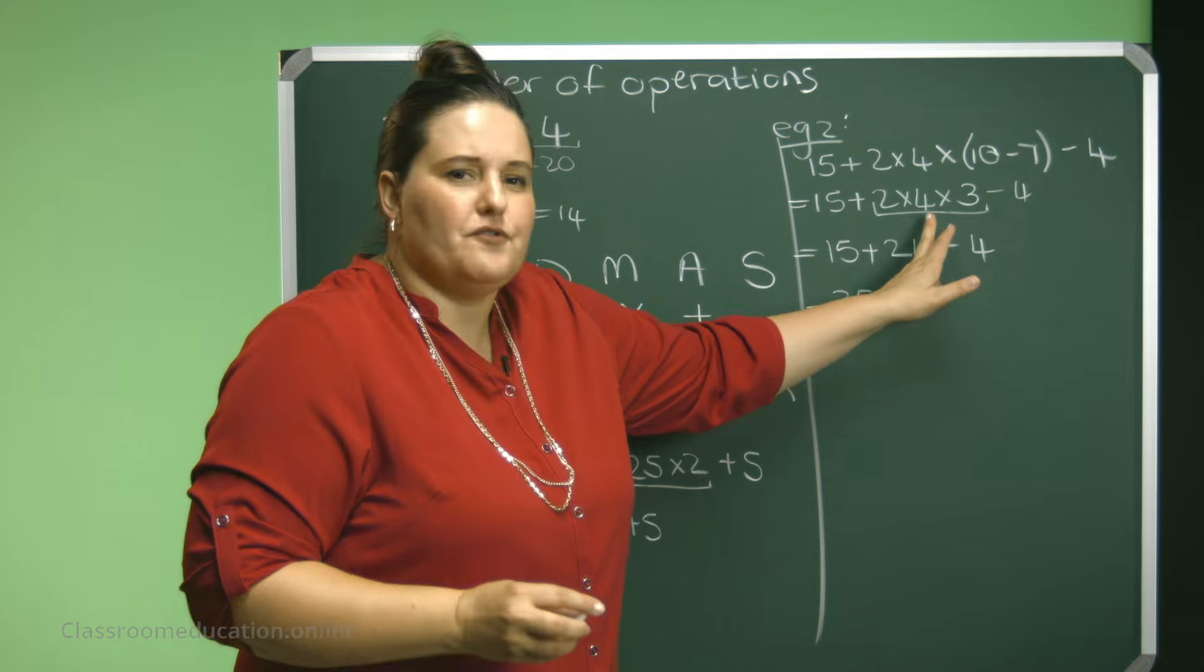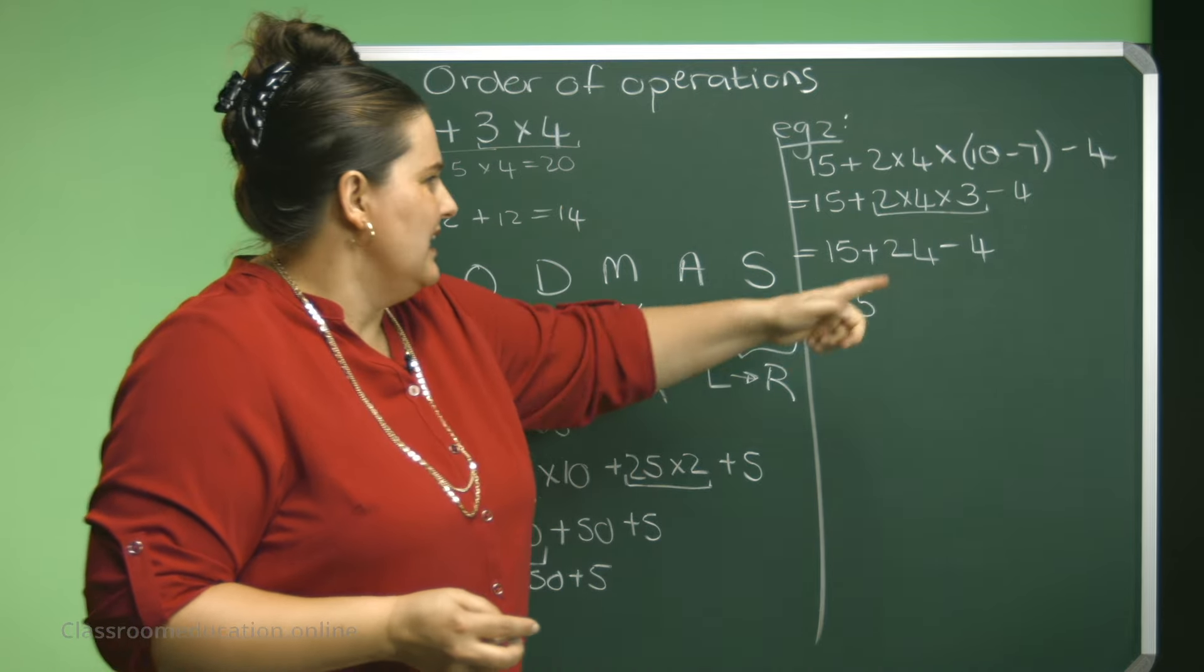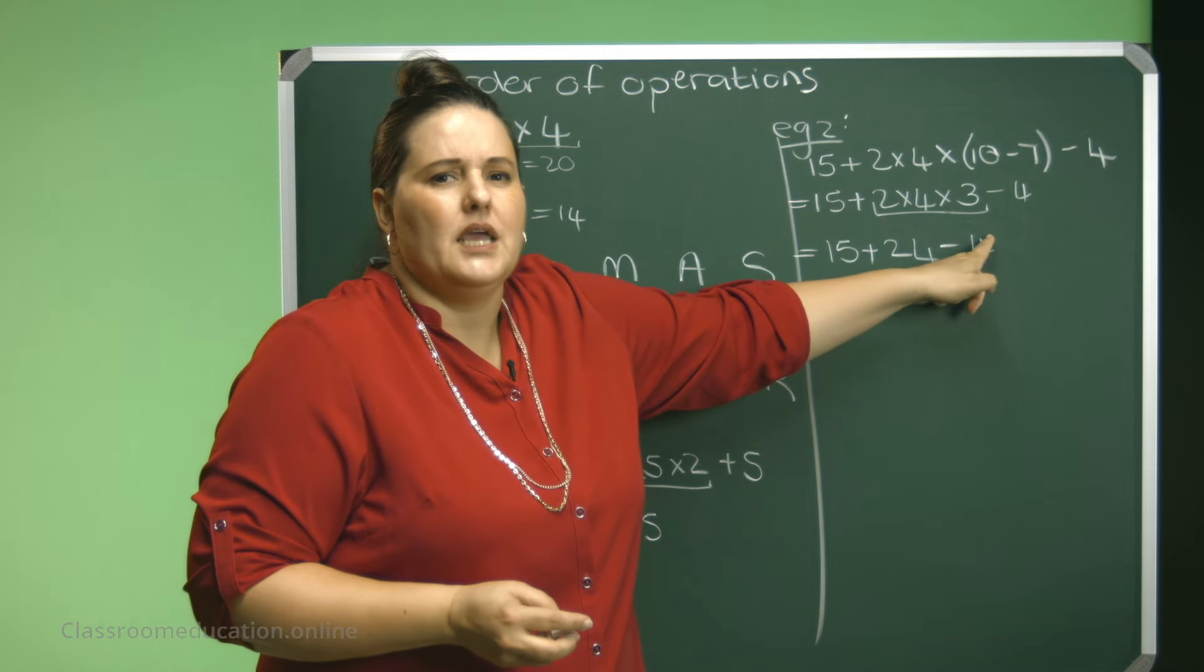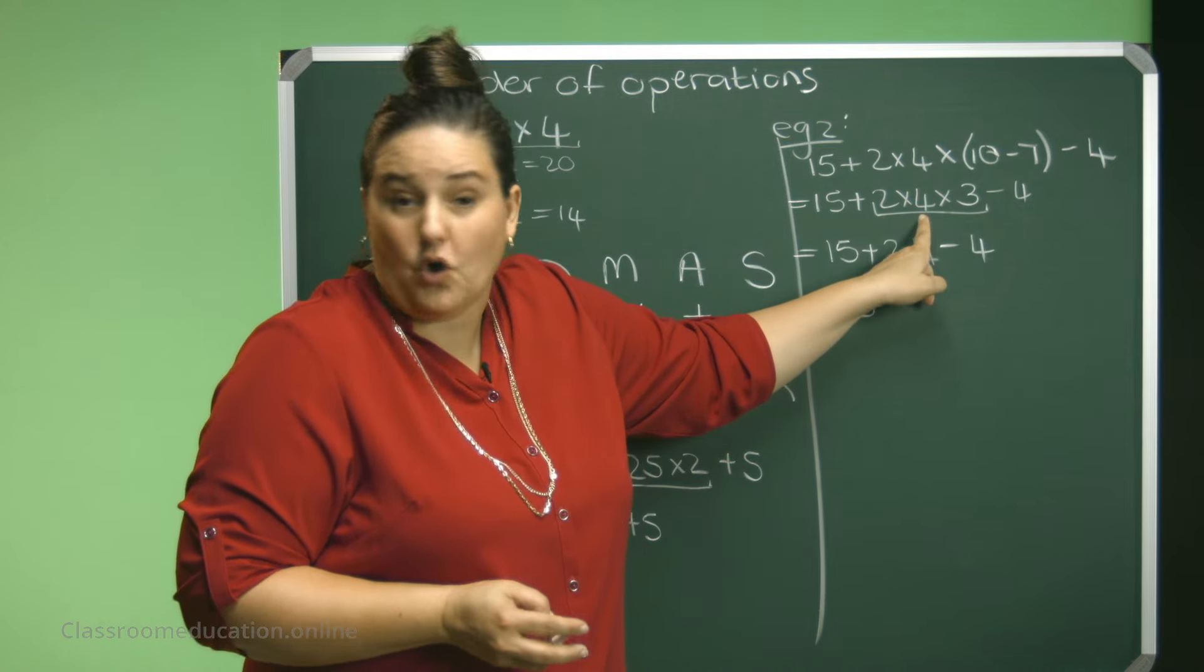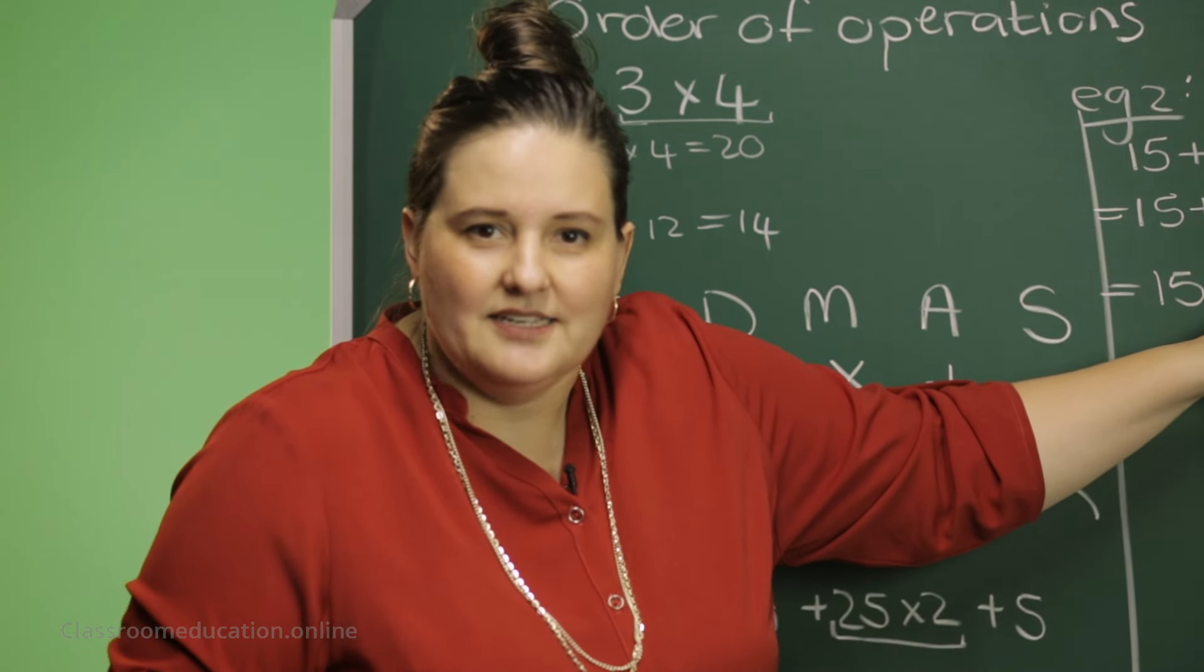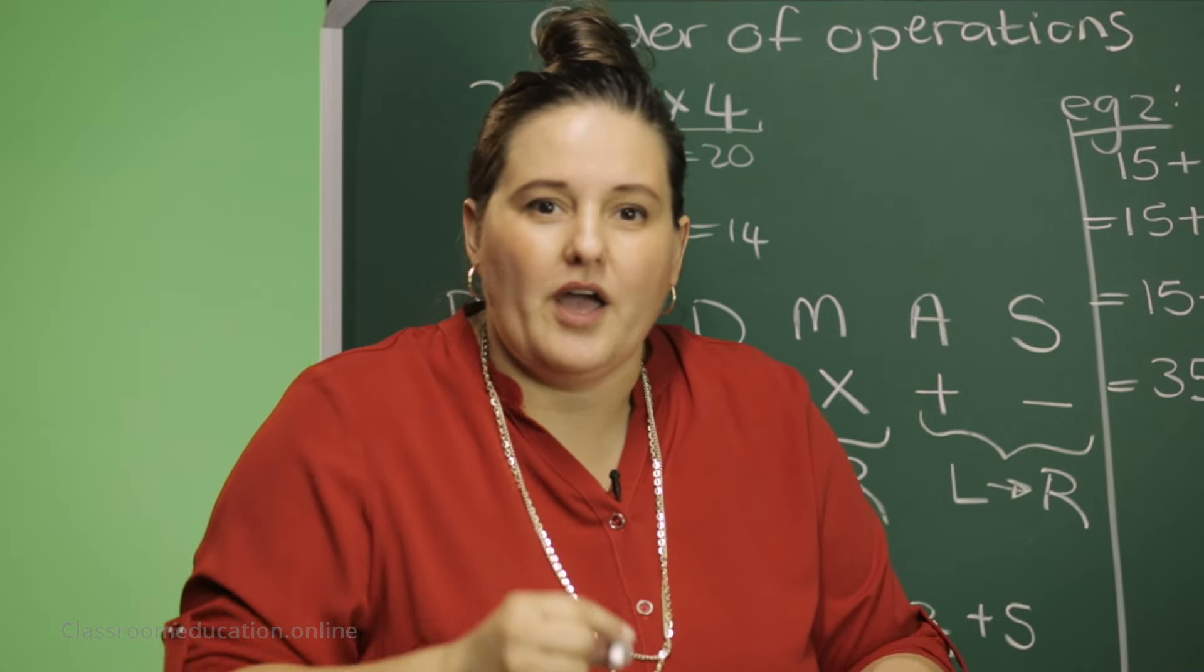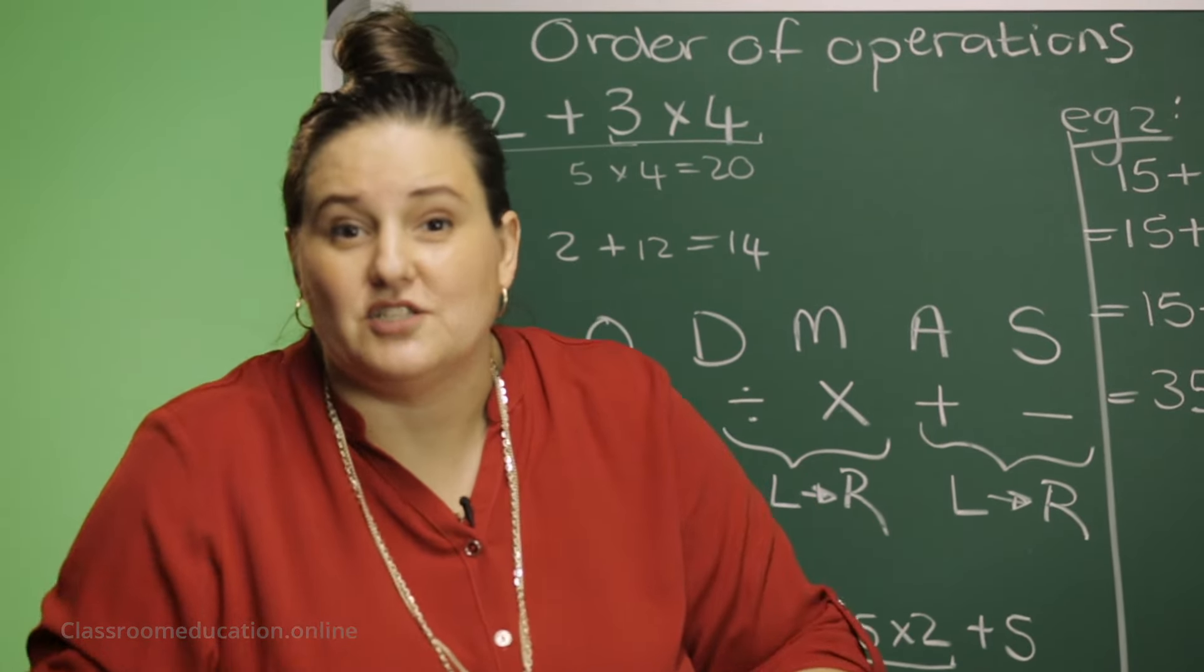Now, have a look here. I said 2 times 4 times 3. Couldn't I have said 2 times 3? That is 6. And 6 times 4, that's also 24. Yes, I could have said that. And that is a property of whole numbers. So we are also going to discuss properties of whole numbers.